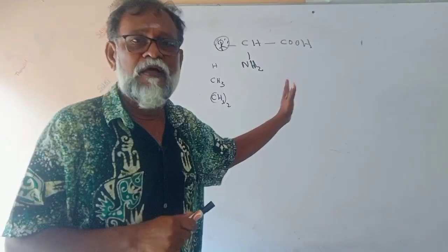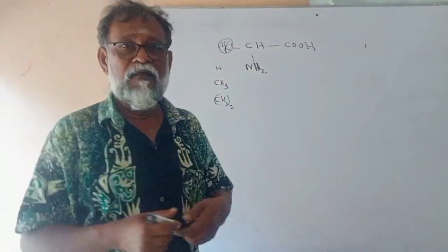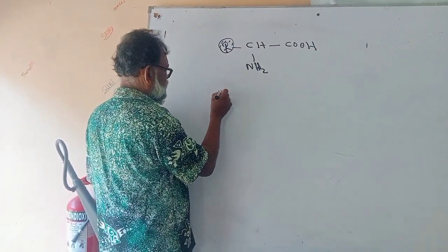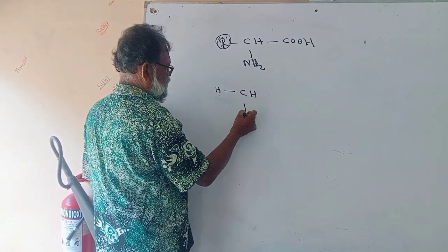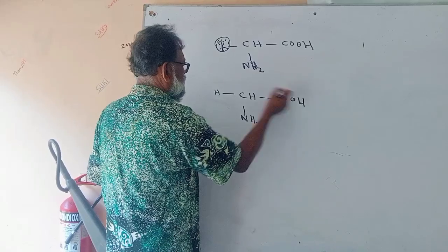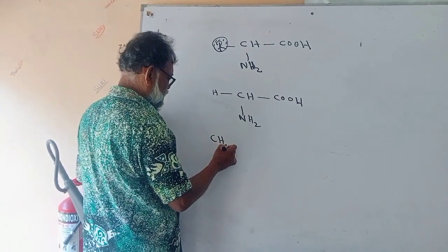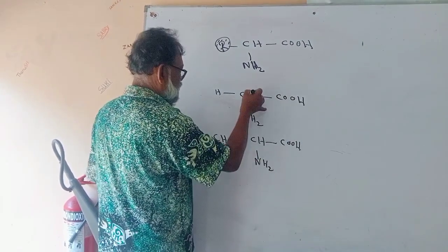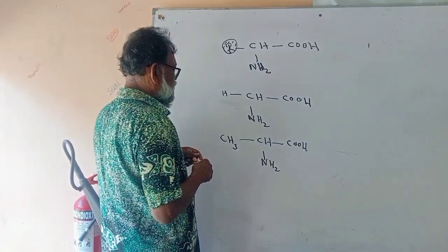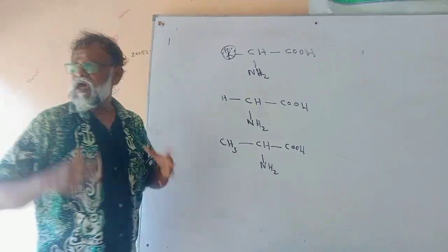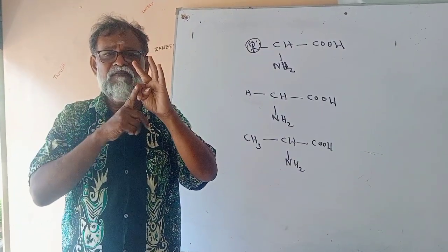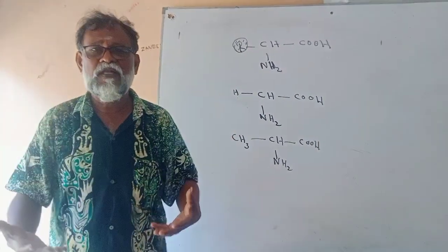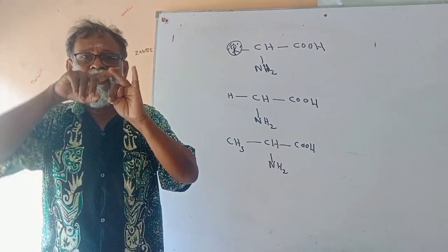If we see an amino acid, we see Glycine. This is Glycine and this is Alanine. Glycine, Alanine, Valin, Leucine, Isoleucine. This is Glycine, Alanine, Valin, Leucine and Isoleucine.